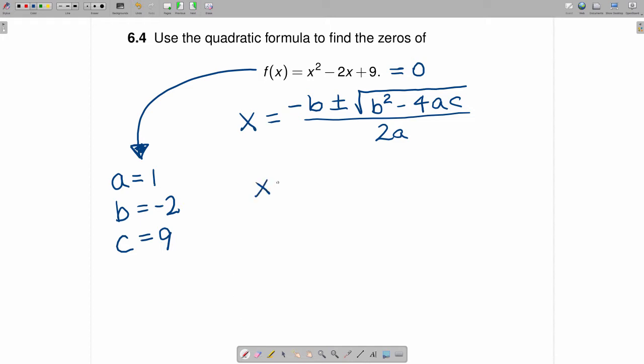So to go ahead and solve this equation, what we get is x is equal to negative b, and that's going to be positive 2, plus or minus the square root of negative 2 squared minus 4 times a, which is 1, times c, which is 9, divided by 2a.